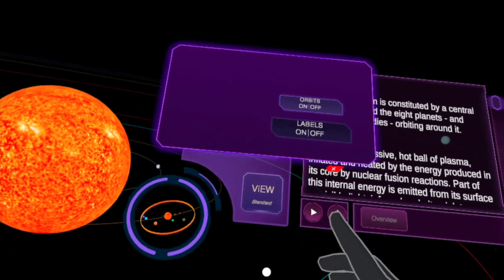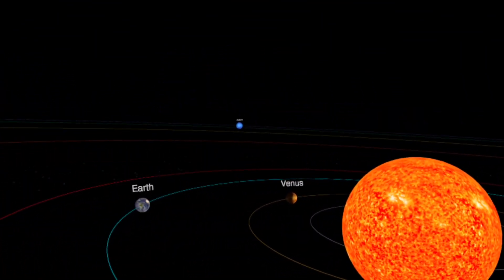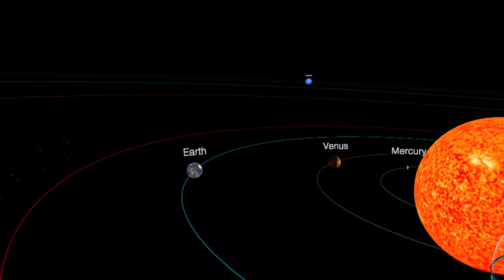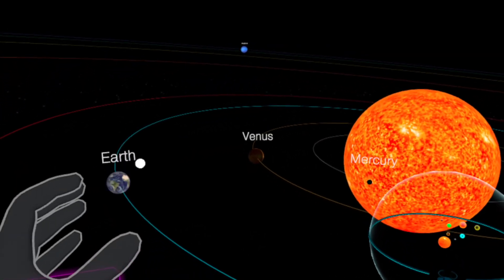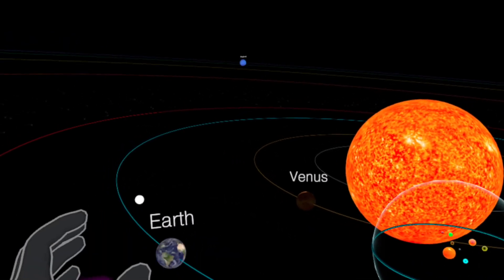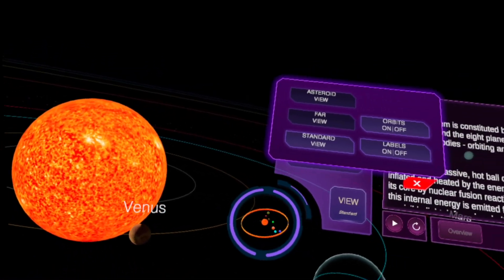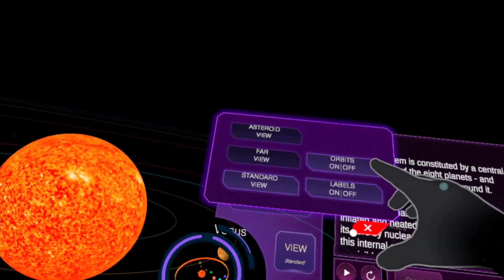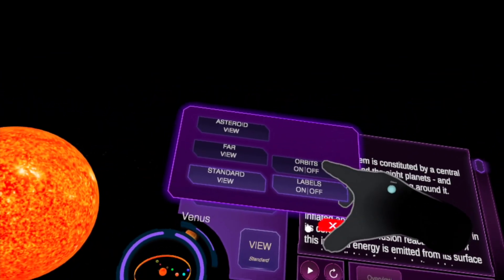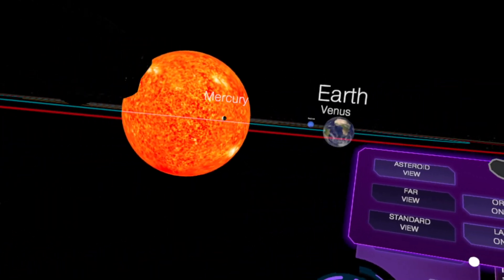Yes, oh this is the Solar System. Okay, there I can see all the planets like that. You can view, you can turn labels on. There's the Earth, you can see the orbits like that, Venus, Mercury.